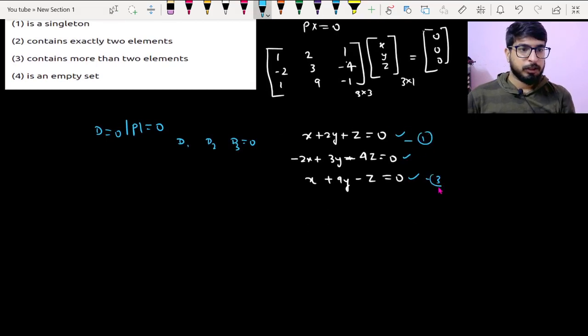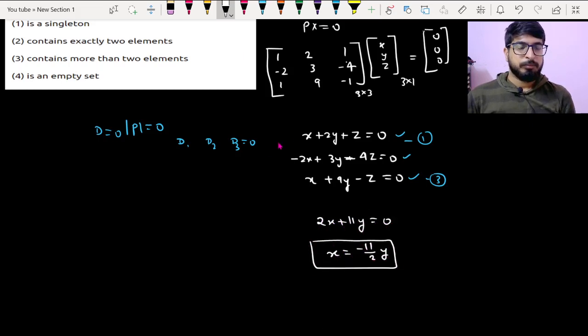So if I add 1 and 3, I'll get 2x plus 11y equal to 0, so I can say x will be minus 11 by 2y.